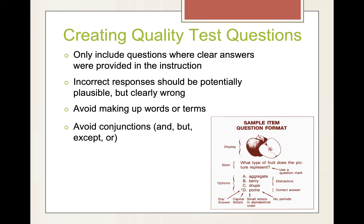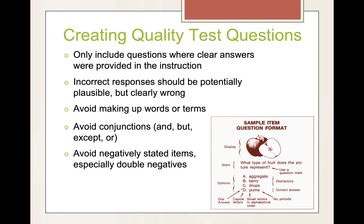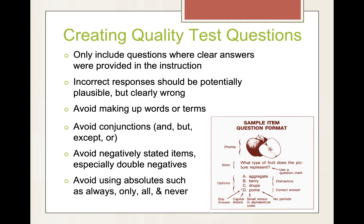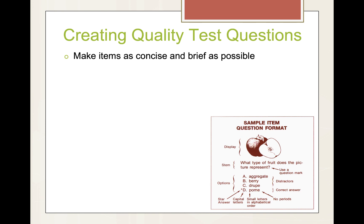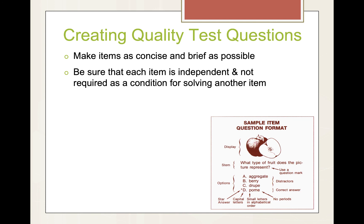Avoid conjunctions like and, but, except, or — these confuse things. Avoid negatively stated items, especially double negatives. Avoid using absolutes such as always, only, all, or never, because most of the time you can make a case for an exception. Make items as concise and brief as possible. Be sure that each item is independent and not required as a condition for solving another item.